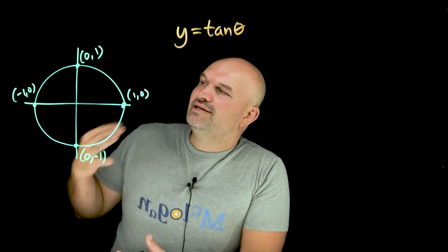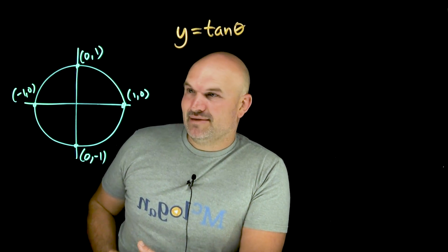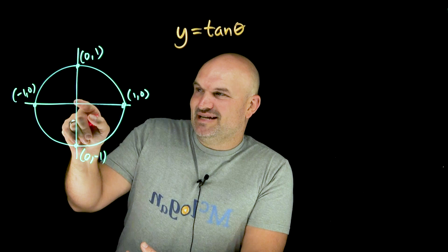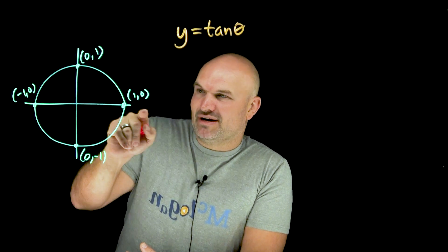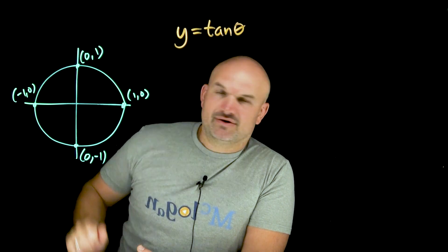But ladies and gentlemen, can we just agree that these are the easiest four points to remember on the unit circle, right? Because again, the unit circle basically just means from the center of, from the origin, right? You're just going out one unit. So we have (1,0), (0,1), (-1,0), and (0,-1).